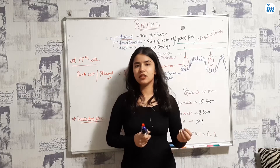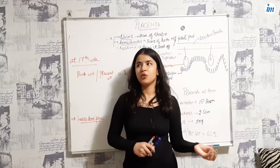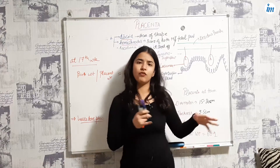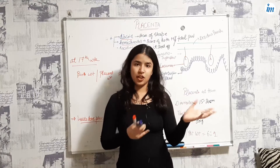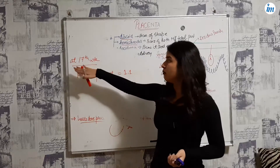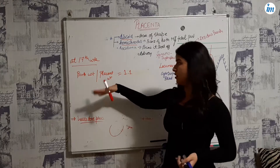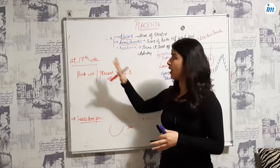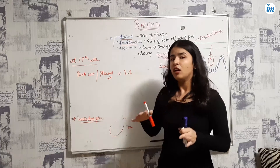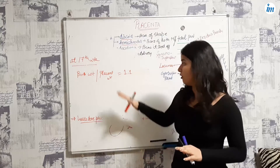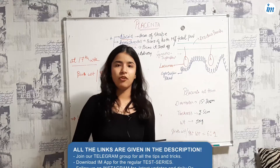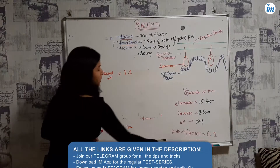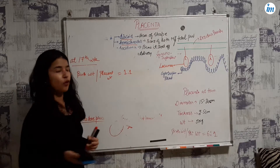To clarify: at birth, if the fetus weighs six units, the placenta weighs one unit (ratio 6:1). At 17th week, if the fetus is 500 grams, the placenta is also about 500 grams (ratio 1:1). Just remember this ratio. Now we will discuss placental formation.